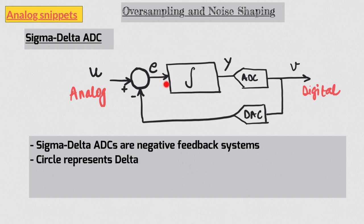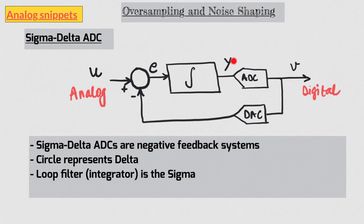This difference is represented by delta in the sigma-delta ADC. The next block is loop filter which can be a simple integrator in case of first order sigma-delta ADCs. And since integrator accumulates, that is the sigma part of sigma-delta ADC. The next block is analog to digital converter and here is the thing. It can simply be a comparator.